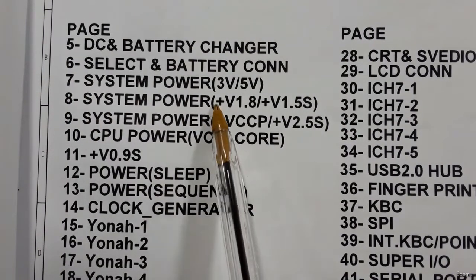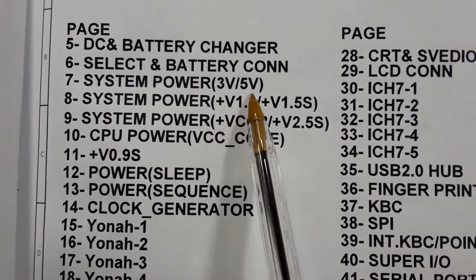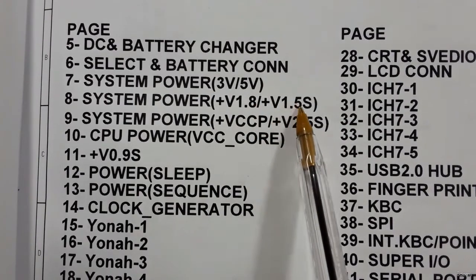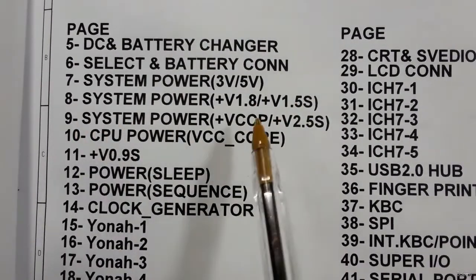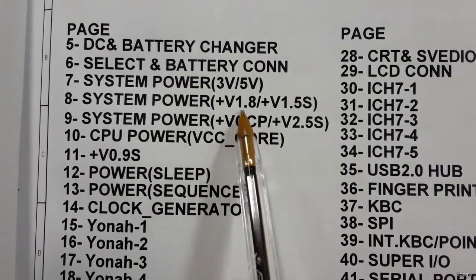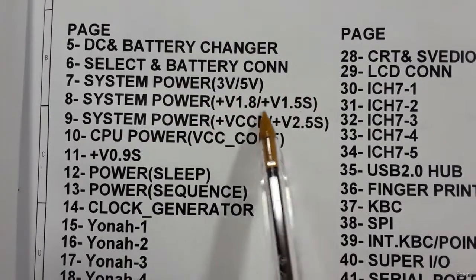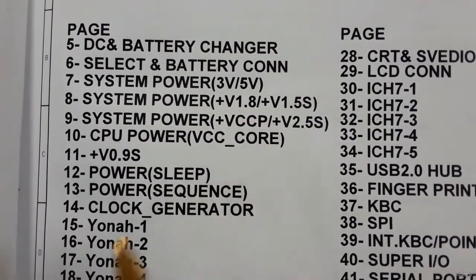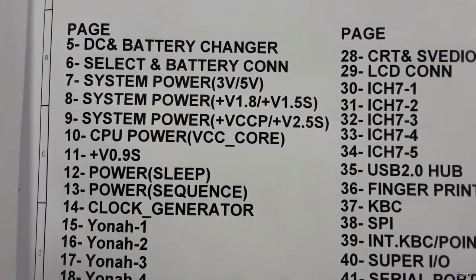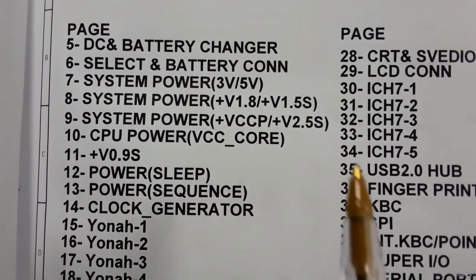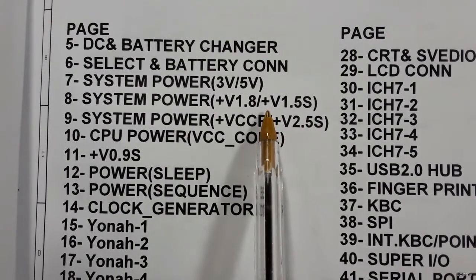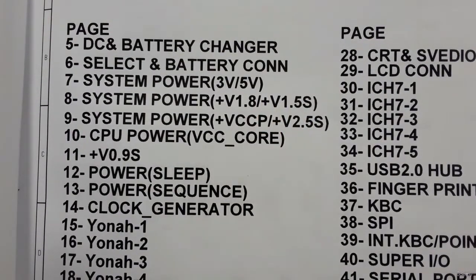On page eight we have system power plus 1.8 volts and 1.5 volts. This is the power for the GMCH and also for the RAM — random access memory — because the RAM in this motherboard is DDR2.